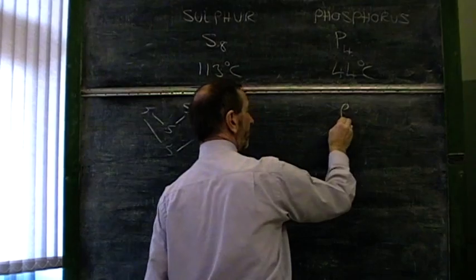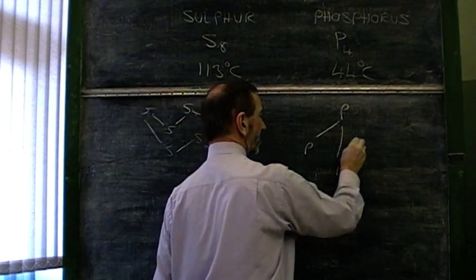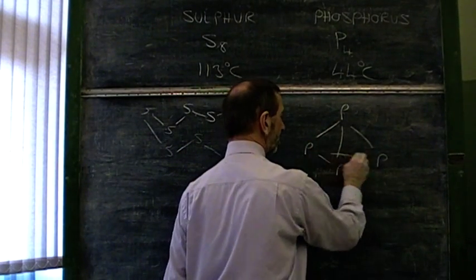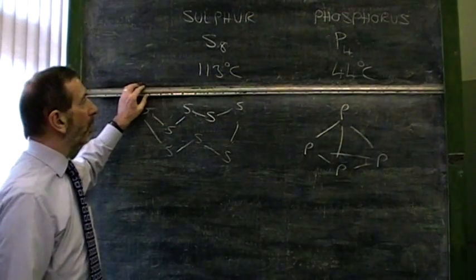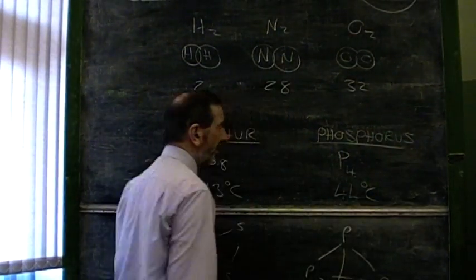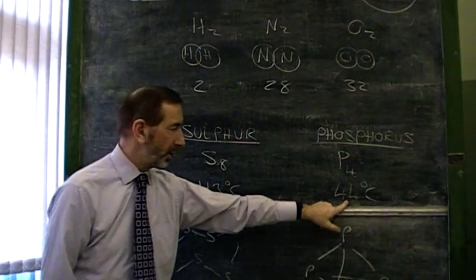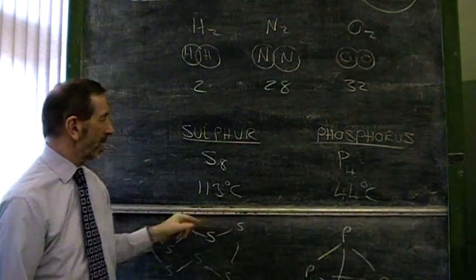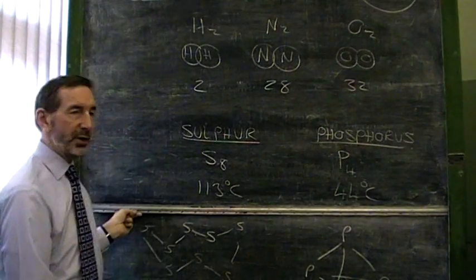The phosphorus, four atoms, arranged in a tetrahedral shape. But really, that's about all we need to know for these slightly unusual elements. They have unusually high melting points, given that they're little molecules, because they have quite substantial masses.